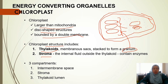In conclusion, chloroplasts have three compartments. The first is the intermembrane space, between the outer and inner membrane. The second is the stroma, which is the internal fluid. The third is the thylakoid lumen.